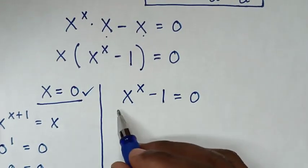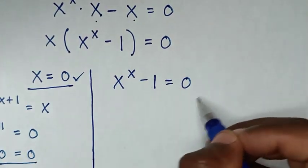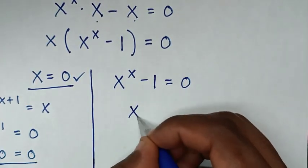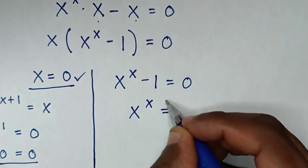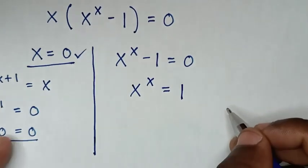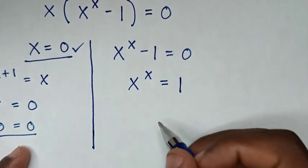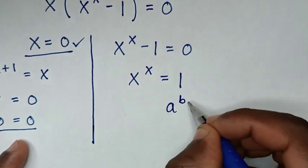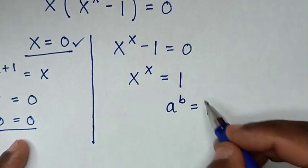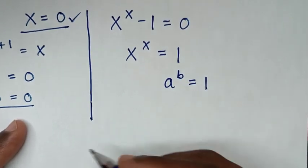To solve the second solution, we take negative 1 to the right side, so it will be x power of x is equal to 1. This is in the form of a power of b equals 1, and from this form we have three cases.